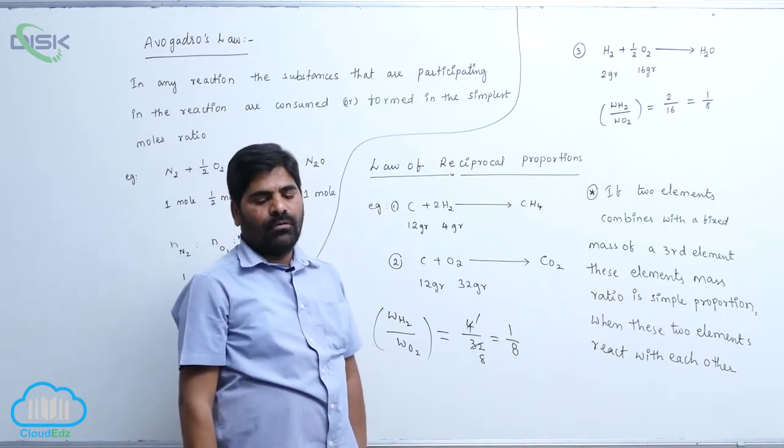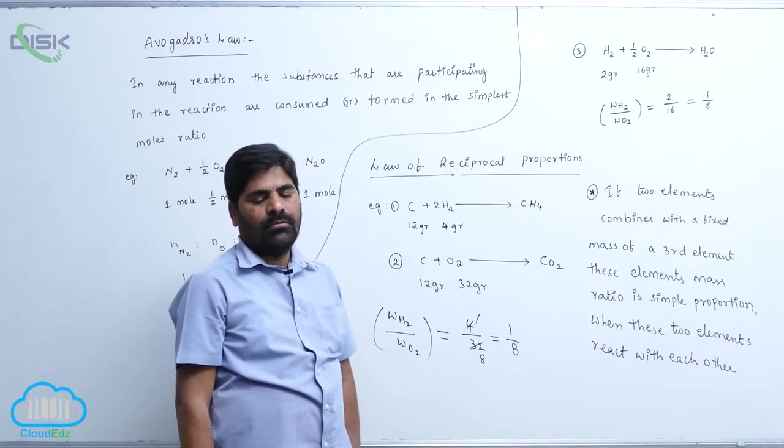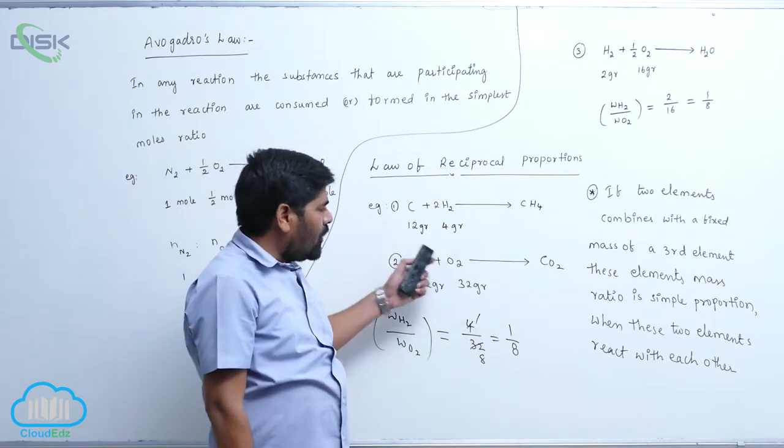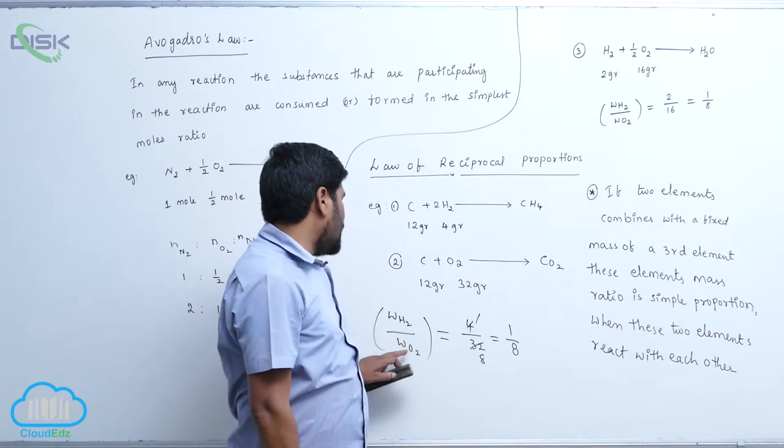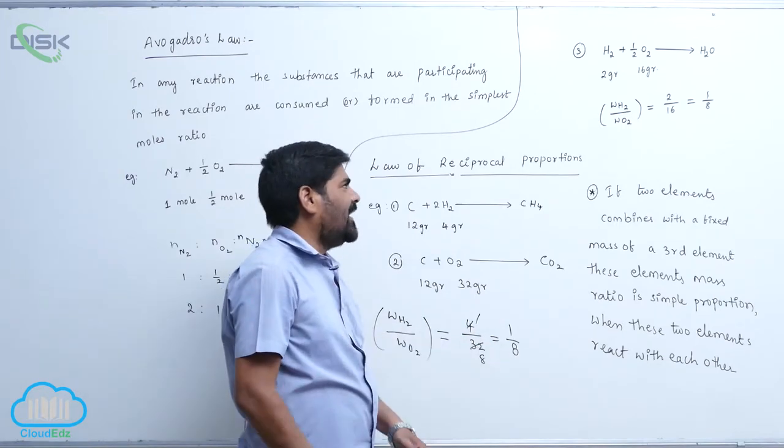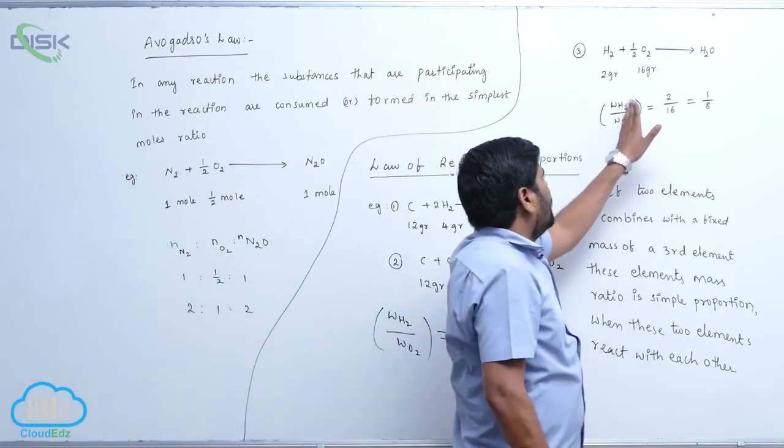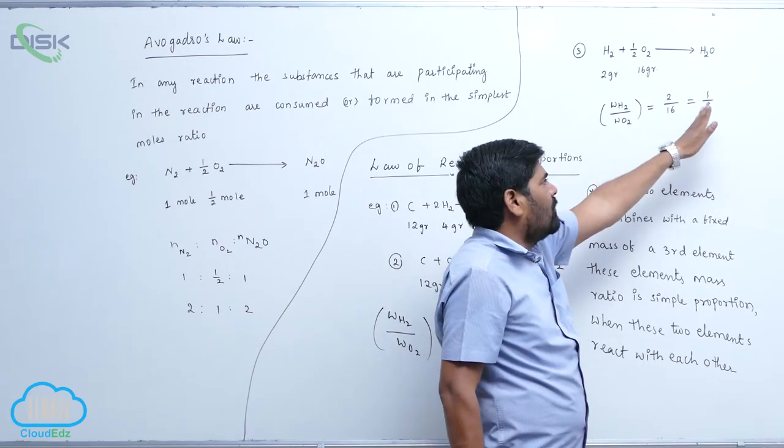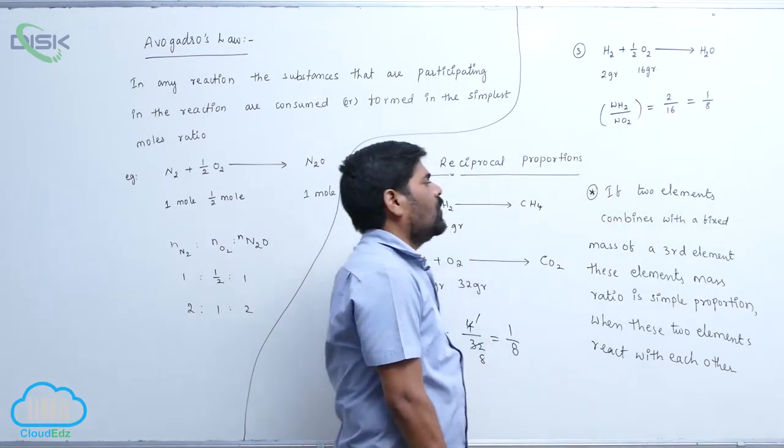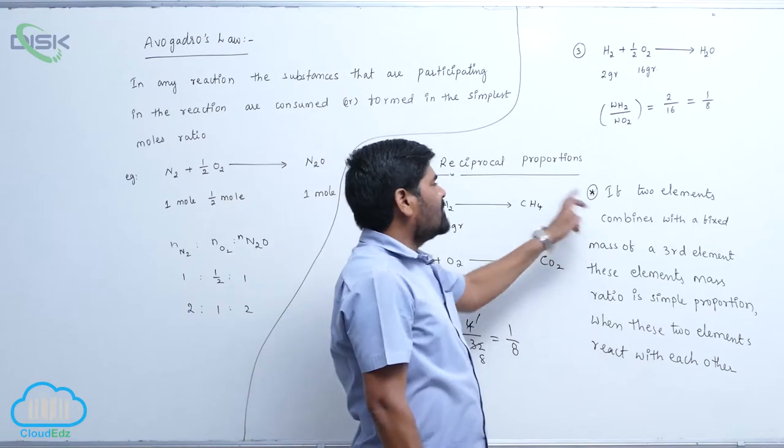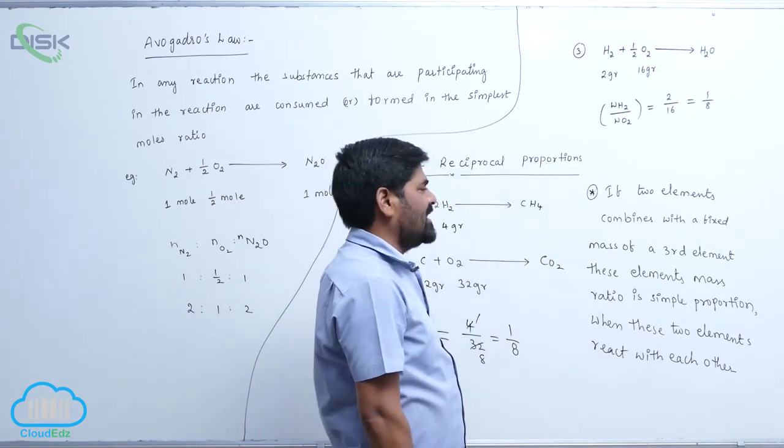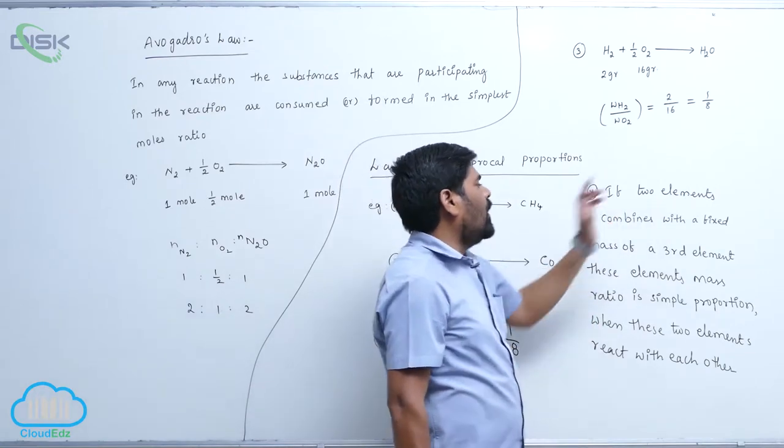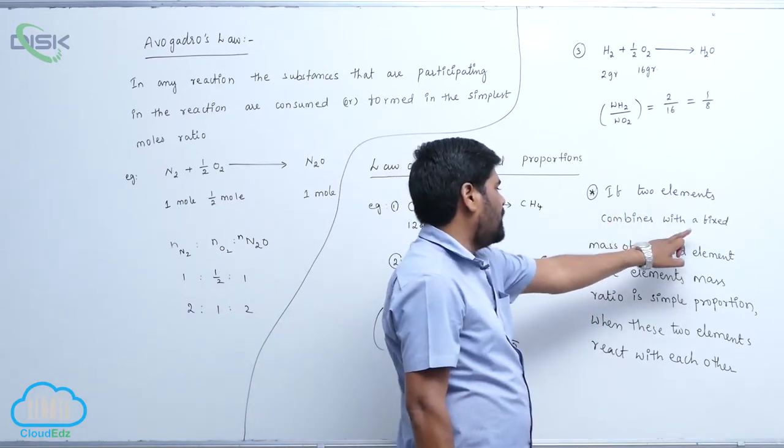So therefore, in all these reactions weight of H2 and O2 here is 1 by 8, here is also the weight of H2 and O2 is 1 by 8. So this law says that a law of reciprocal proportion says that if two elements combine with a fixed mass...